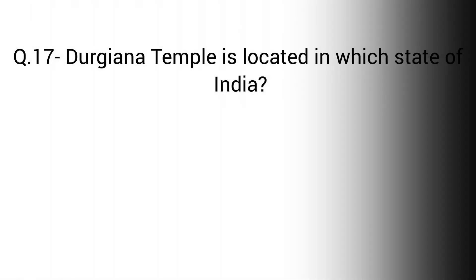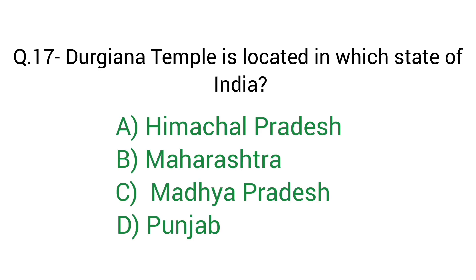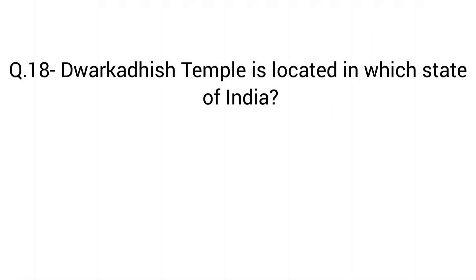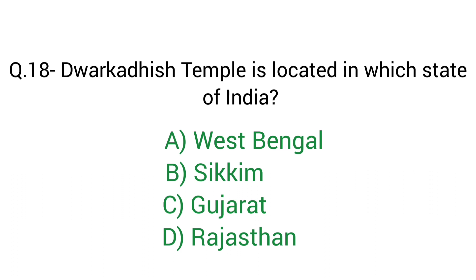Question No. 17: Durjayan Temple is located in which state of India? Right answer D. Punjab. Question No. 18: Dwarkadhish Temple is located in which state of India? Right answer C. Gujarat.